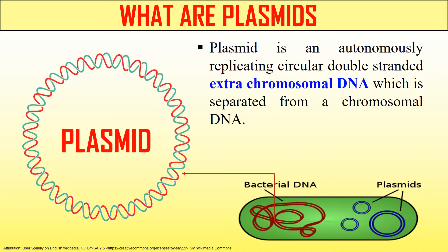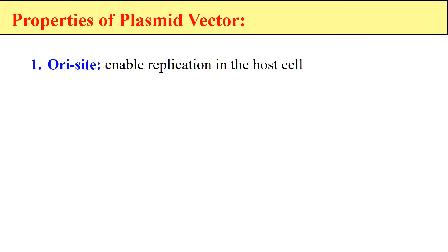So, the extra-chromosomal DNA is known as plasmid. Now, what are the properties of a plasmid vector? The first property is ori — the origin of replication. This is the site from where replication starts, which is required for the replication of this plasmid inside the host cell. When we place our plasmid vector into the host cell, it will replicate autonomously due to this origin of replication.